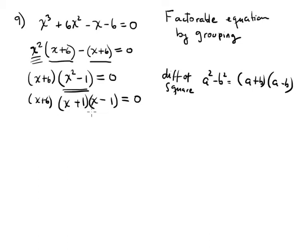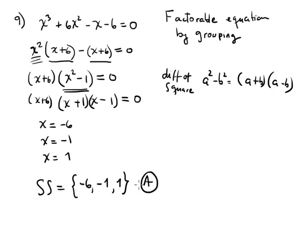Now the solution is negative six, negative six and negative one and positive one. The solution set for this equation is negative six, comma negative one, comma positive one. That is corresponding with option A in our handout.